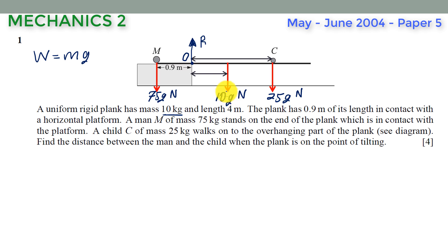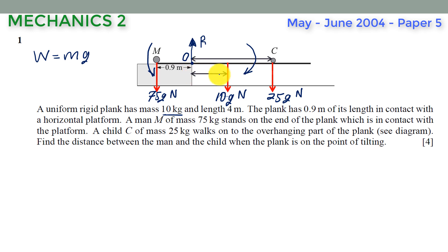The weight of the plank and the weight of the child tend to turn the system clockwise, while the weight of the man tends to turn the system anti-clockwise. All distances are measured from the turning point and are perpendicular to the line of action of the force. Since the distance from the end to point O is 2 meters, the distance from O to the center of mass is 2 minus 0.9, which equals 1.1 meters.